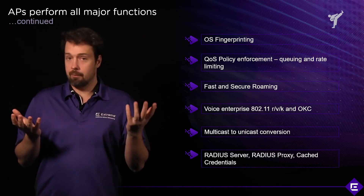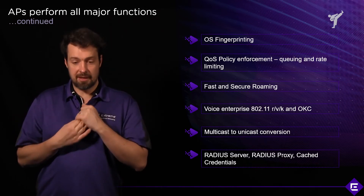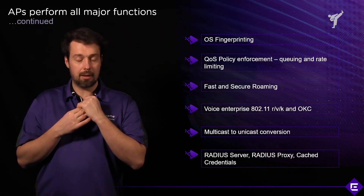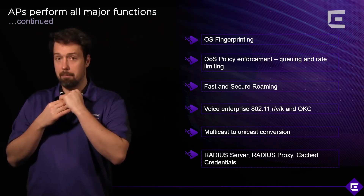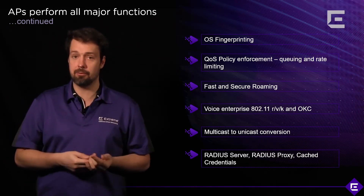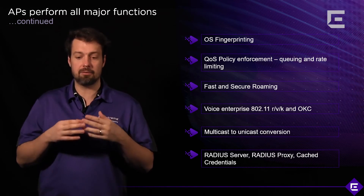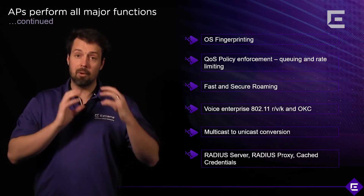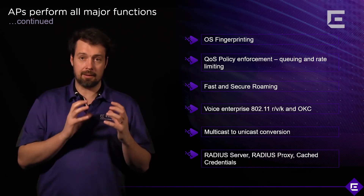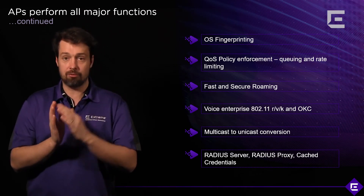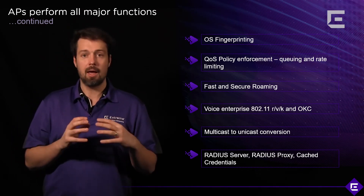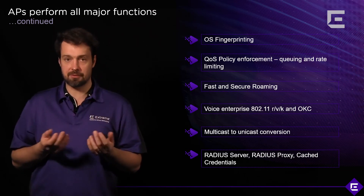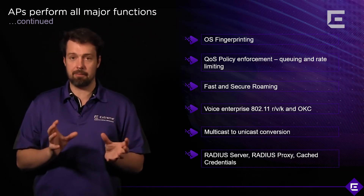Fast and secure roaming is all done on the AP. Voice Enterprise functionality required for measurement and fast and secure roaming with 802.11r, v, and k is all implemented on the access points. Multicast handling — including multicast to unicast conversion, filtering out multicast traffic, and protecting from broadcast storms — is all done on the AP.